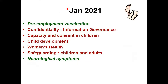January 2021: pre-employment vaccination again, neurological symptoms in terms of clinical topics. From a managerial aspect, safeguarding — specifically looking at children and adults — reflects the fact that as STs for ARCP, you now have to undertake mandatory child and adult safeguarding with updates every single year. So that's very, very important.